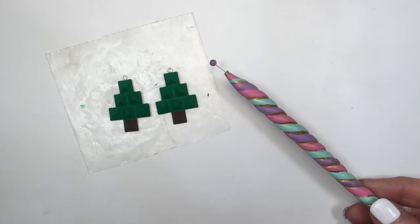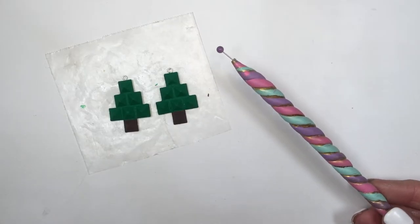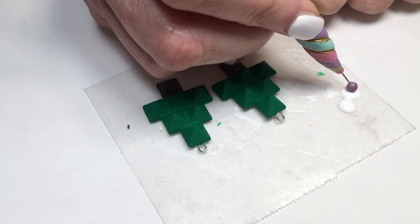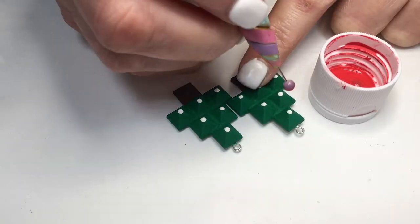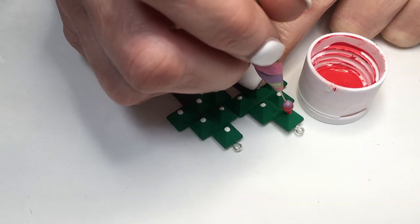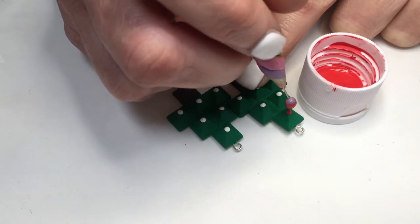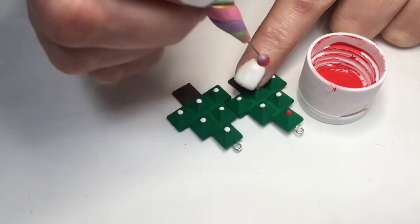I'm going to be using the dotting tool to paint those spheres. First, I'm going with the white, following the same logic that I did on the tree, just to make the colors I'm adding on top pop more. I'm going to wait for my white to dry, and then I'm adding those colors.